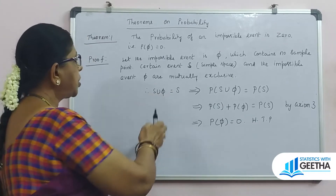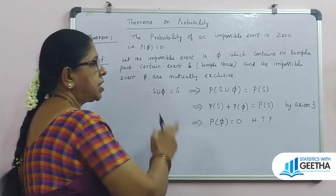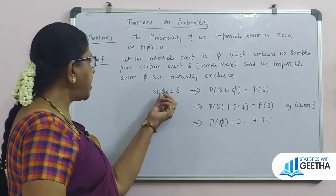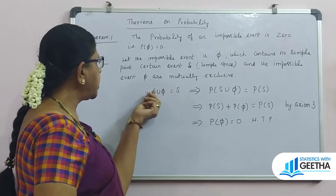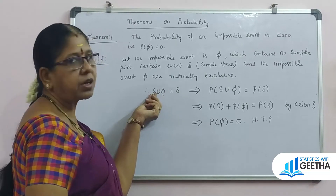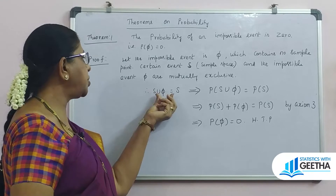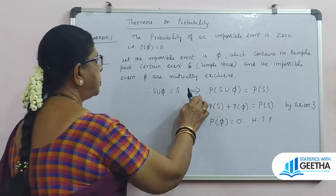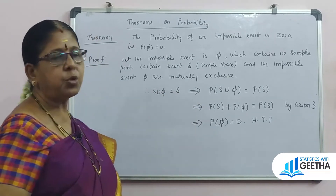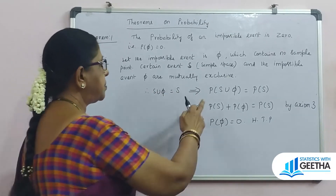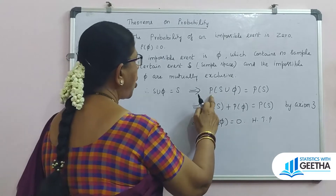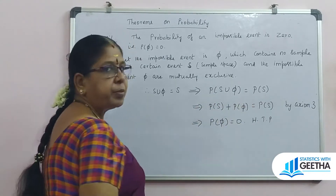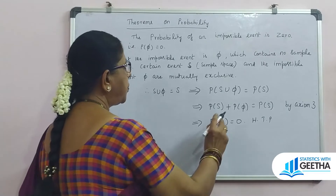Therefore, S union π is equal to S itself. Since π is the empty set and S is the totality of all possible outcomes, S union π equals S. Taking probability on both sides, probability of S union π equals probability of S.